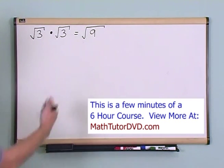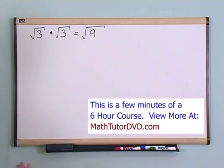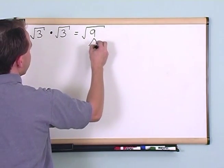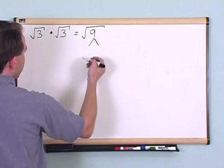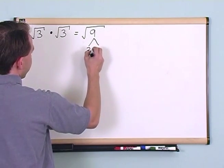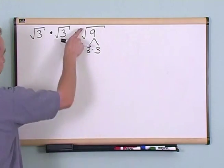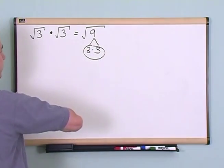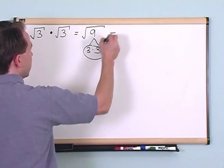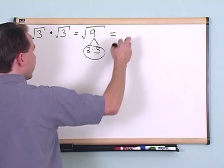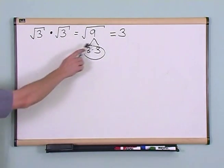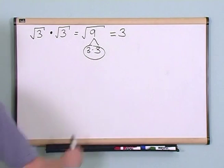You could write that down as your answer, but we should always check to see if the radical is fully simplified. In this case, 9 is equal to 3 times 3. These are square roots, so I'm looking for pairs of 2, which I've found. So I can pull this 3 out of the radical. The answer is 3.